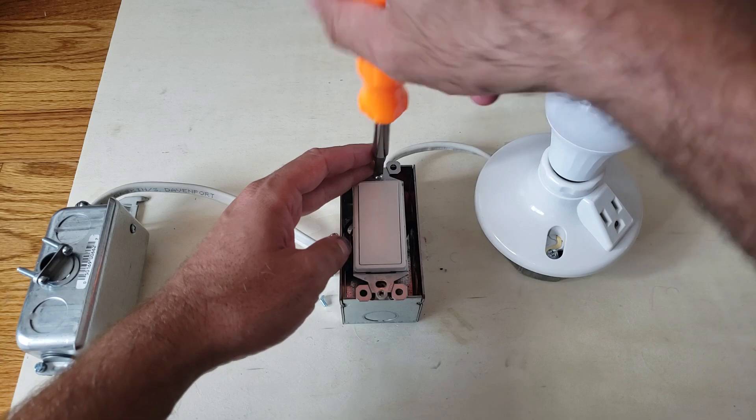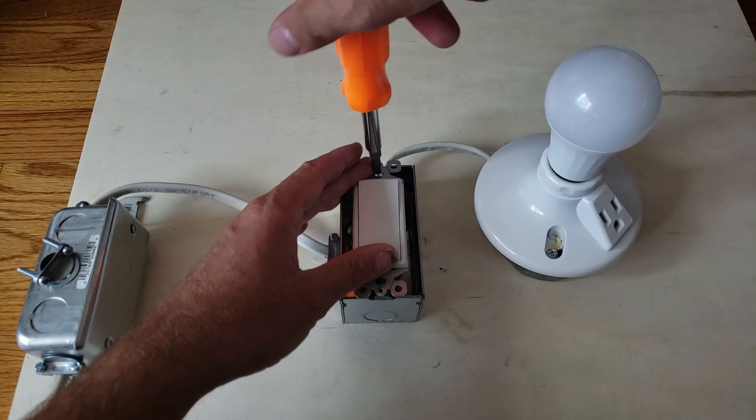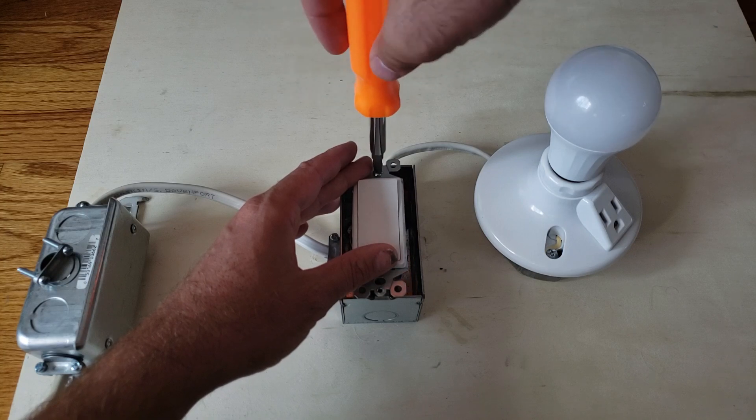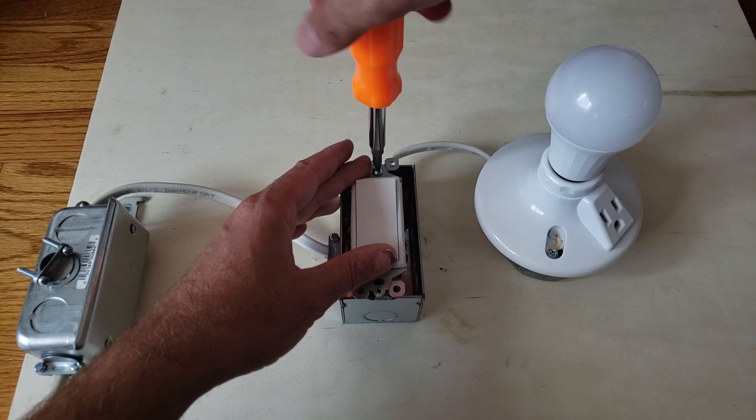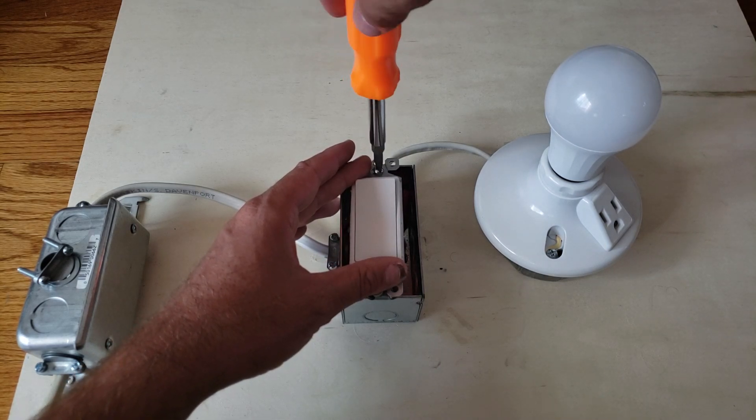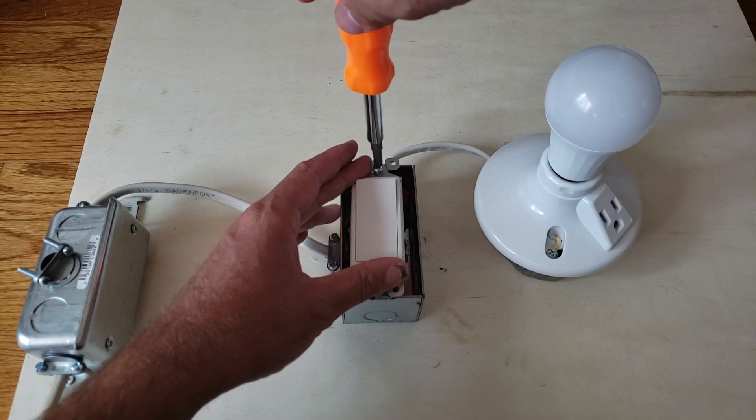An important thing to note is, let's say that you look through this and you don't have any neutral wire in your light switch. What can you do then? How can you get a smart switch? Well, a lot of people think, oh well I'm just going to add a neutral wire - that is a lot of work.